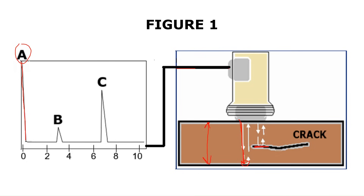If there is a defect, some of the waves will strike the defect and reflect from it, while some waves continue to the bottom. So there will be one echo at the back wall — the back wall echo — and one echo at the defect. Three signals appear: A is the initial pulse, B is the defect echo, and C is the back wall echo.